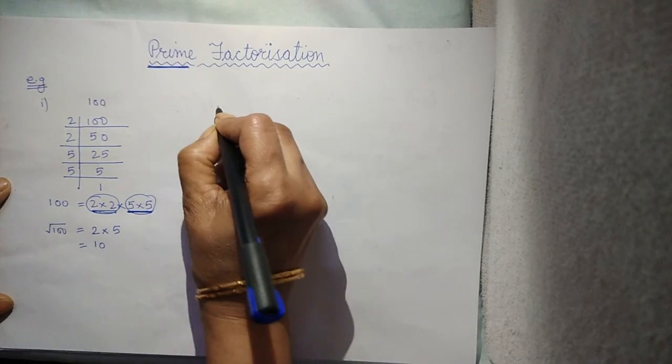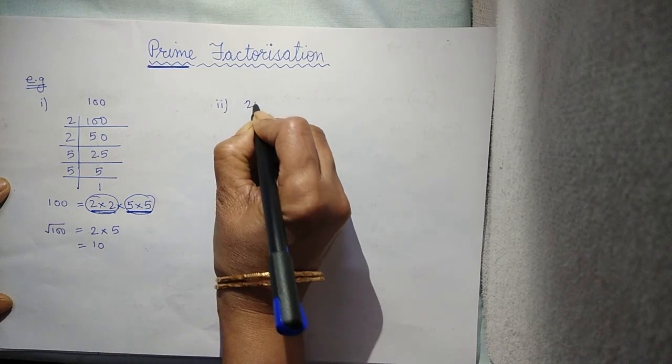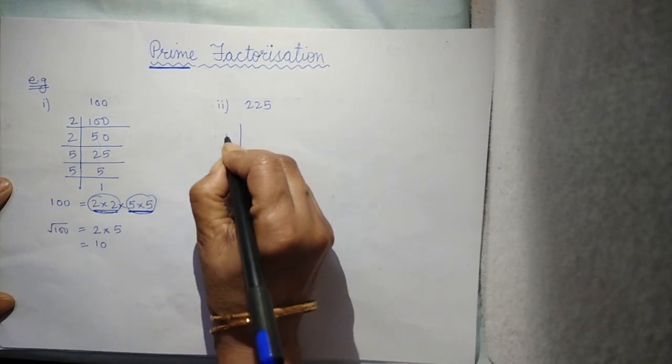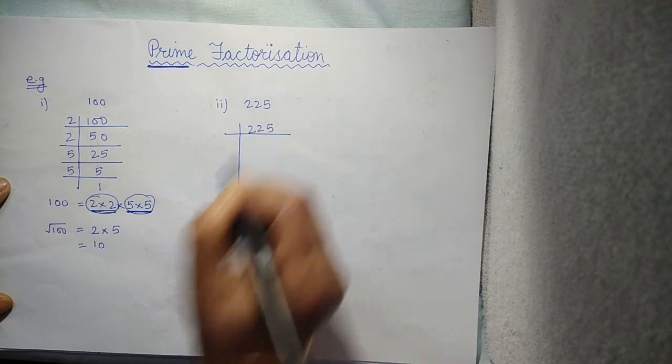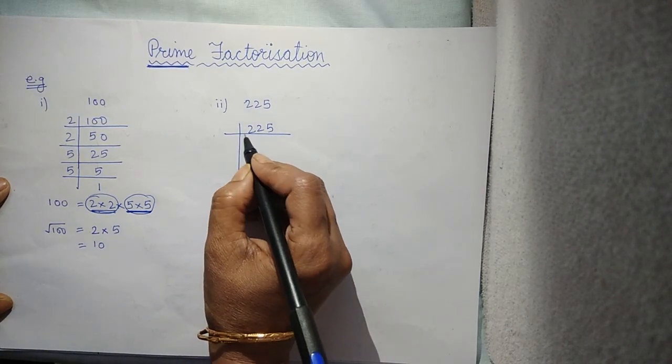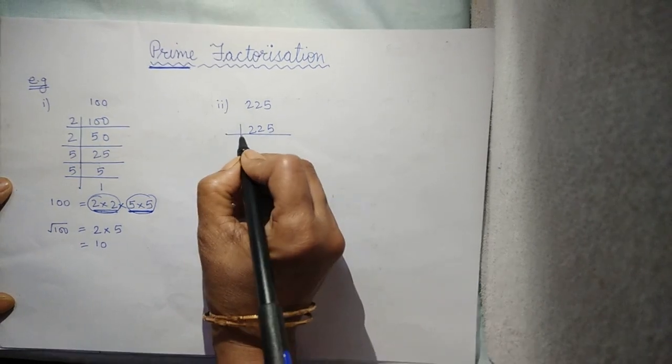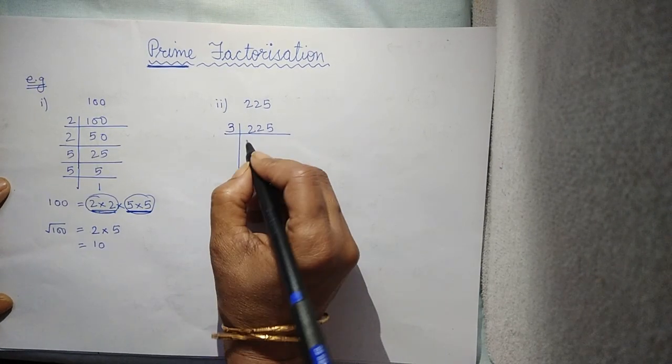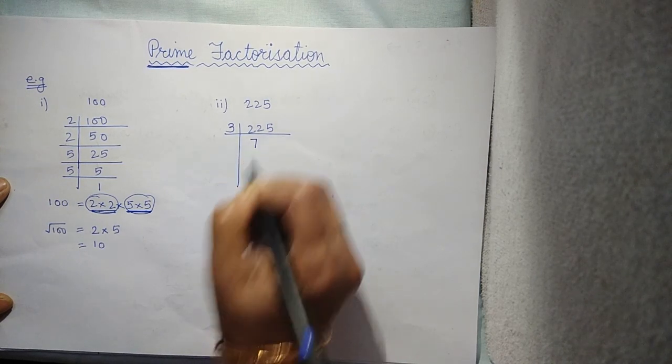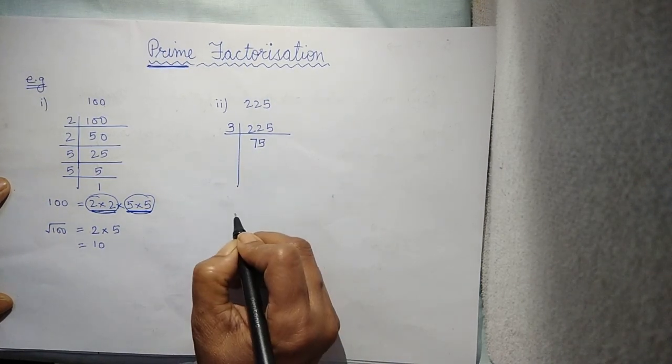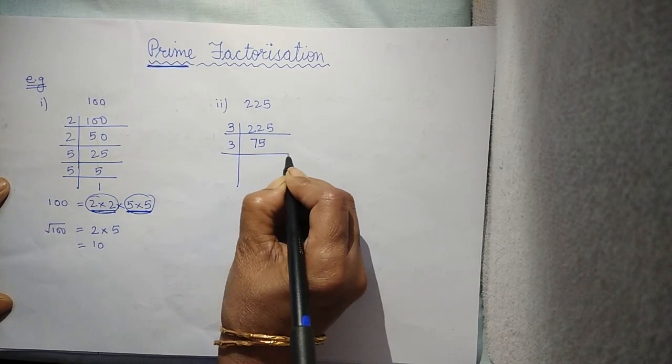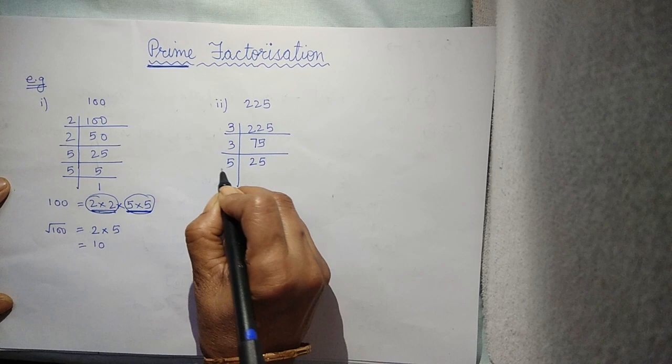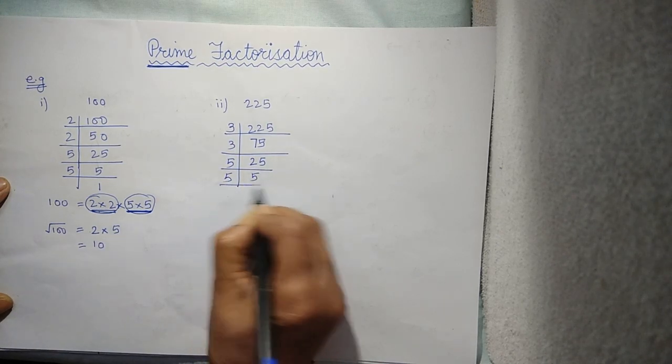Let's take one more example. Example is 225. Find the square root of this number by prime factorization method. 225. Now, be careful that you have to take only prime numbers here. With which number it goes? It goes with 3. So, 3, 75, 3, 25. Again, it goes with 3. You will get 25. Now, it goes with 5, 5 and 1.